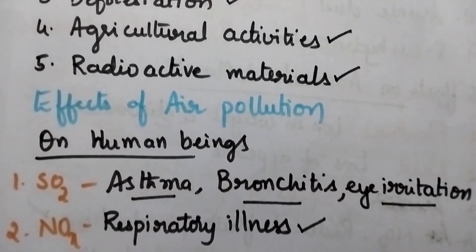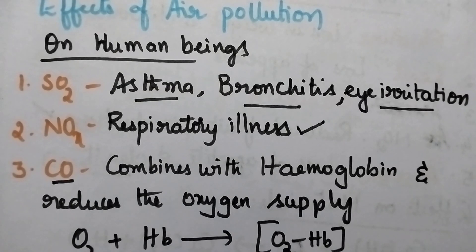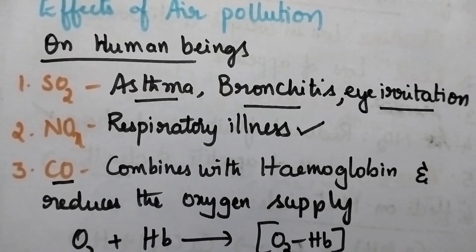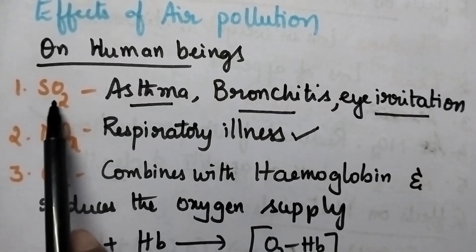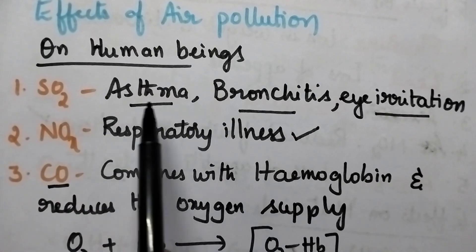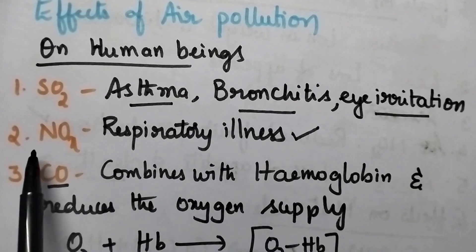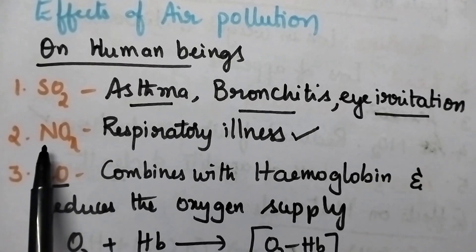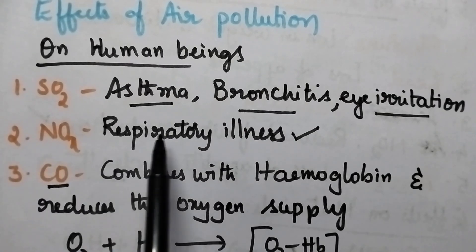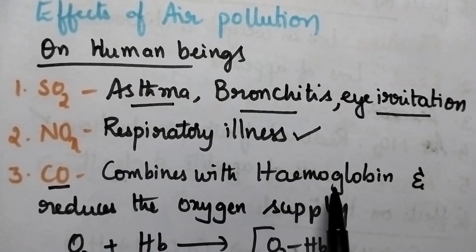Because of air pollution, there will be several effects on human beings, animals and building materials. If the air consists of oxides of sulfur, in particular sulfur dioxide, it is responsible for asthma, bronchitis and eye irritation. If the air consists of carbon monoxide, its target is hemoglobin.